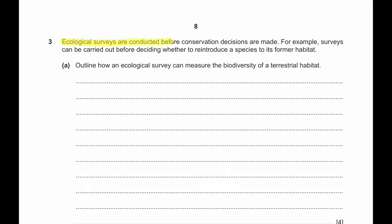Question number three. Ecological surveys are conducted before conservation decisions are made. For example, surveys can be carried out before deciding whether to reintroduce a species to its former habitat. Outline how an ecological survey can measure the biodiversity of a terrestrial habitat. Basically, ecological survey can do random sampling technique. It can use frame quadrats to measure the vegetation. Frame quadrats can be placed at random using random number generating app. The number of species within that particular quadrat can be recorded, and the number of individuals within the quadrat can also be recorded. This process can be repeated to find average and multiply with the particular area to find the average estimate of the whole area.